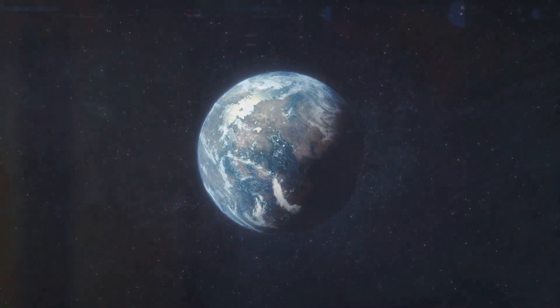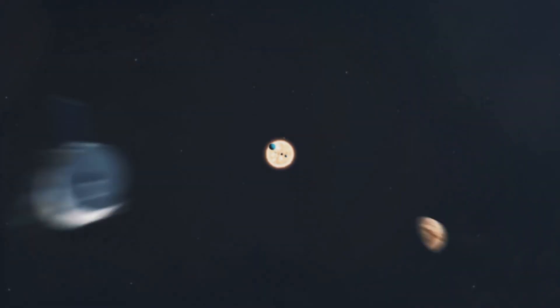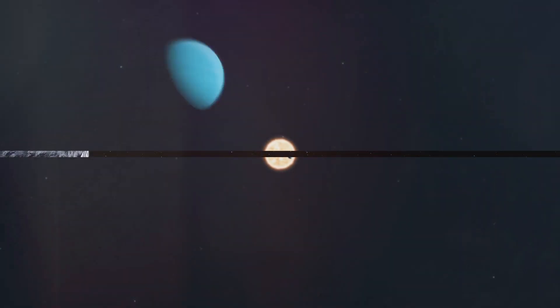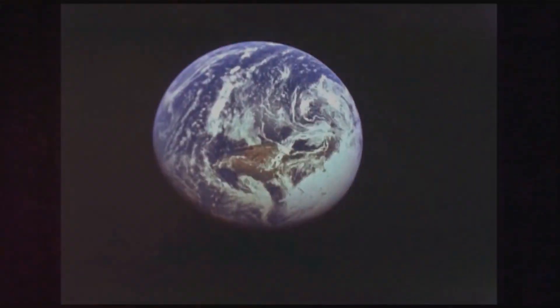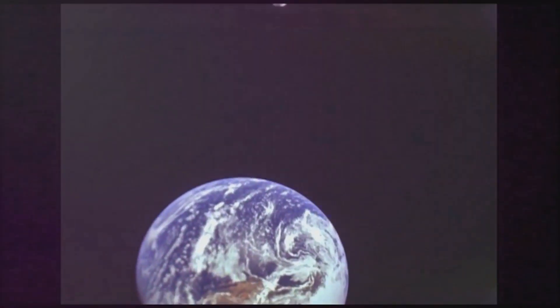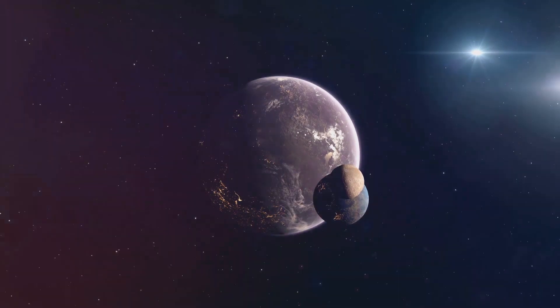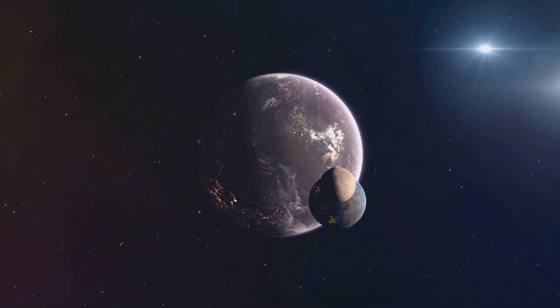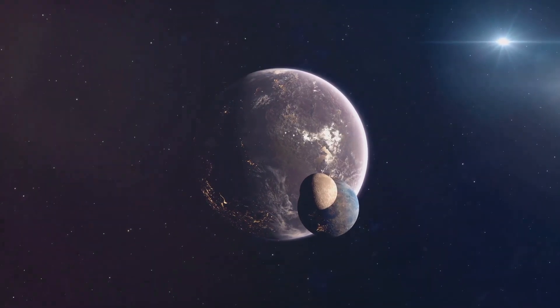Runner up at number two is Teagarden b. This exoplanet is one of the smallest found to date and is located in the habitable zone of its star. It's also one of the closest exoplanets to us, making it a prime candidate for future study. And finally, at number one, we have Kepler 1649 c. This exoplanet is located in the habitable zone of its star and is only slightly larger than Earth.